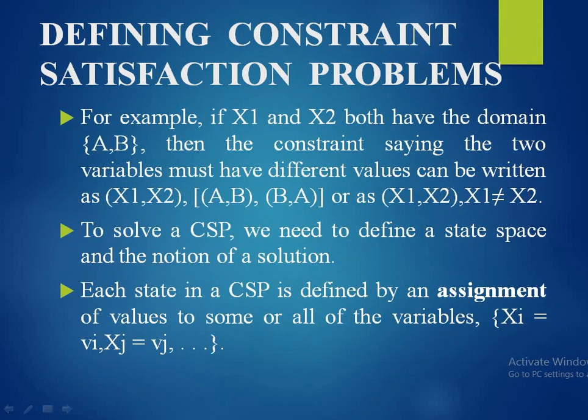For example, if X1 and X2 both have the domain {A, B}, then the constraint saying the two variables must have different values can be written as (X1, X2) in [(A,B), (B,A)], or as X1 ≠ X2. To solve a constraint satisfaction problem, we need to define a state space and the notion of a solution.